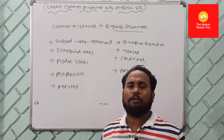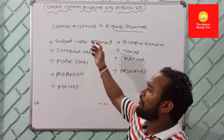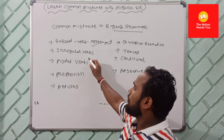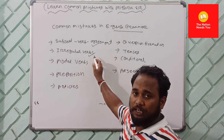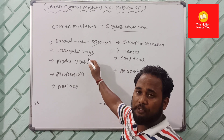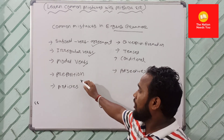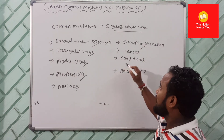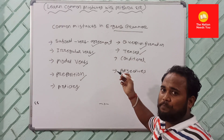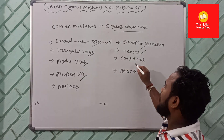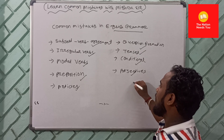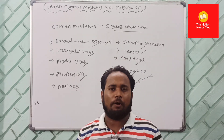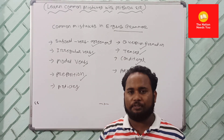That's why it is very much essential to know what the common mistakes are that may happen in our writing. Mostly, common mistakes come from subject-verb agreement, irregular verbs, modal verbs, prepositions, articles, question formation, tenses, conditionals, adjectives, and many more.